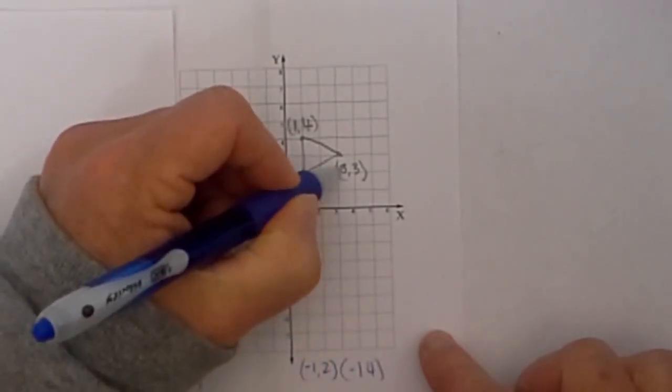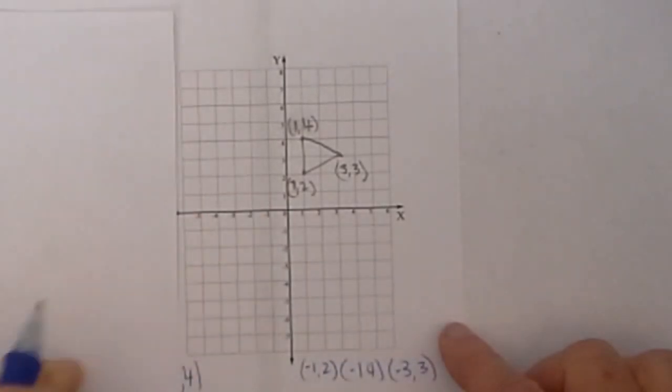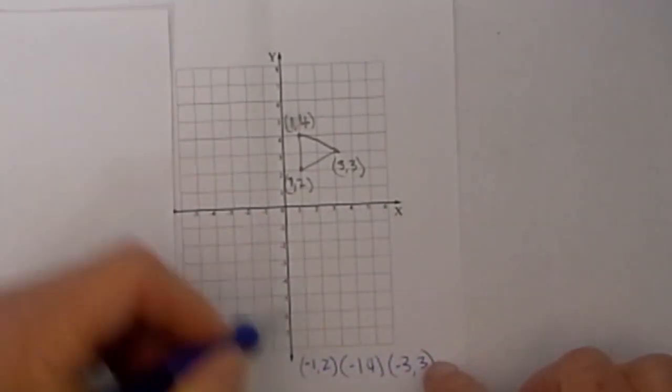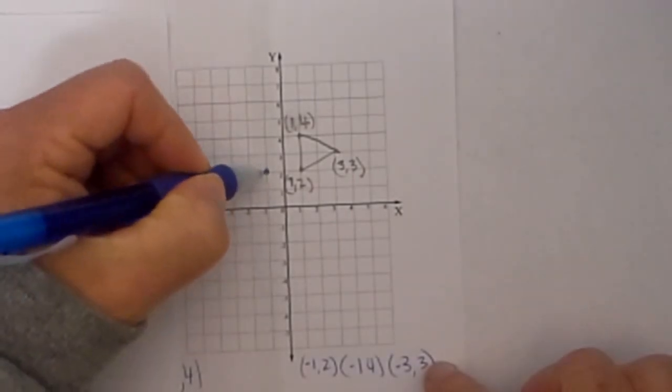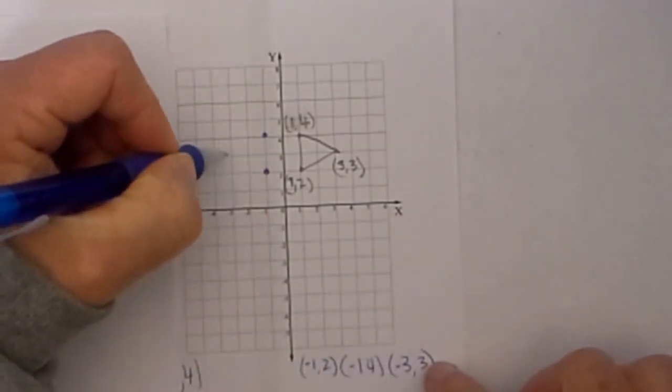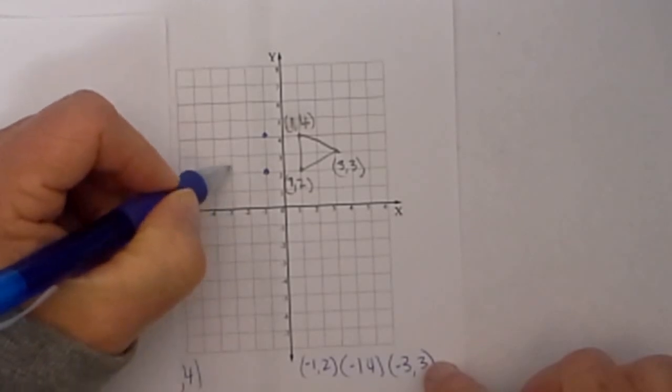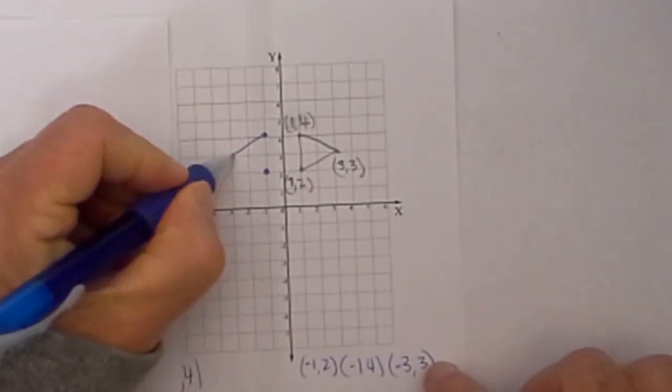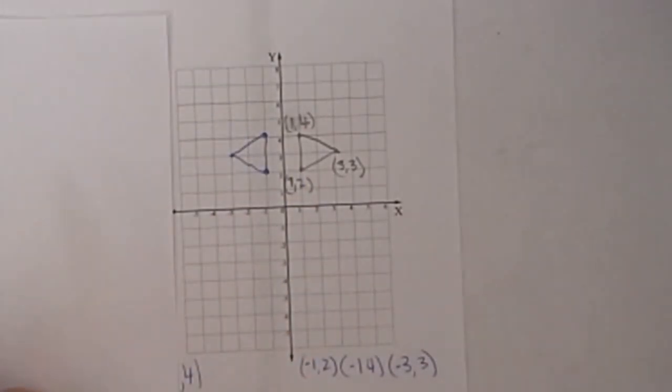Now we have (-1, 2), (-1, 4), and (-3, 3). I am going to connect the dots and you will see that it is a reflection of that shape.